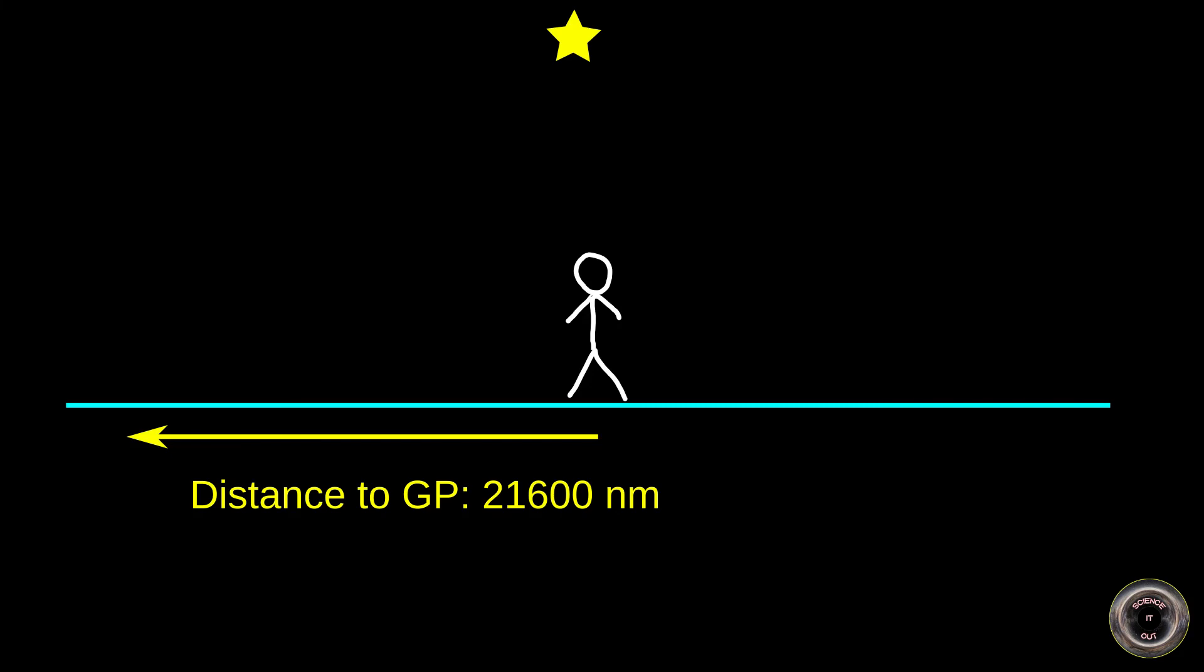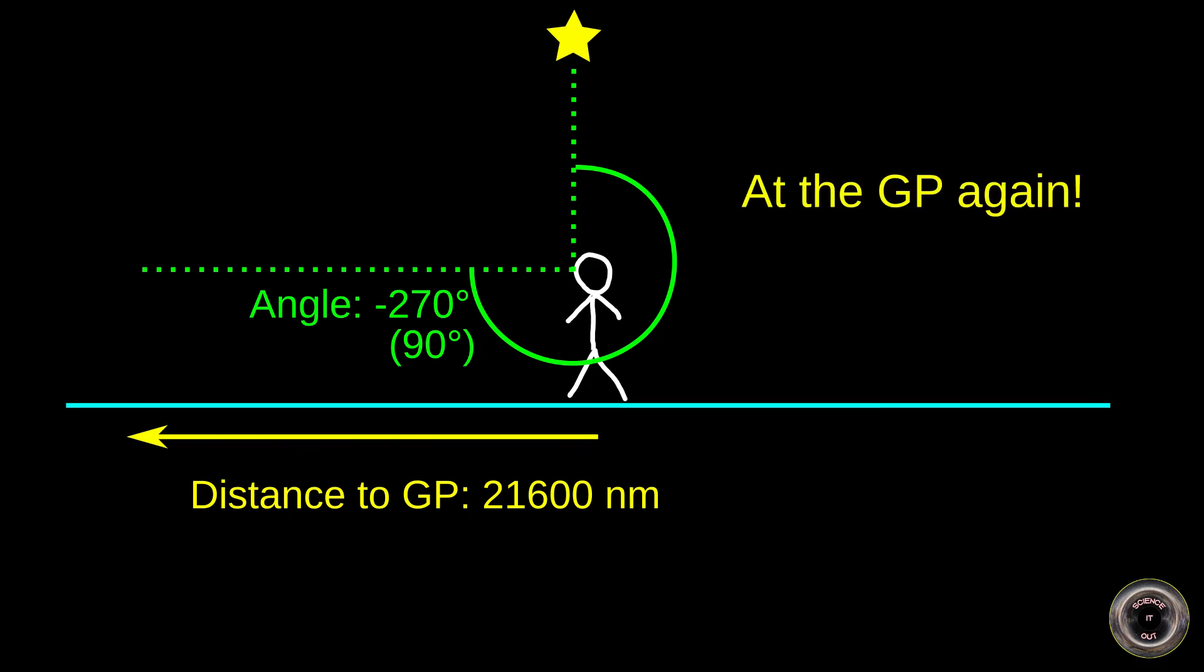We'll only stop at 21,600 nautical miles from the GP. At this point, the star should drop by 360 degrees from the zenith. But wait. 360 degrees is one full rotation. So dropping 360 degrees from the zenith puts it back in the zenith. So the star is back directly overhead. We're at the star's GP again. We are moving in a straight line away from the GP and somehow we came back.